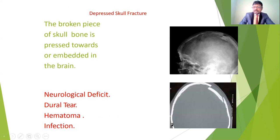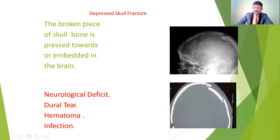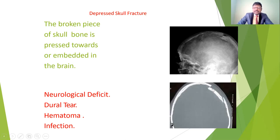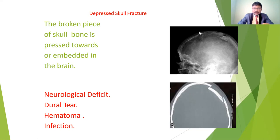Next is the depressed skull fracture. If a force hits one particular side, the fracture causes the bone to go inward — the broken piece of skull bone is pressed toward or embedded in the brain. It gives neurological deficiencies and may cause a dural tear. The dura mater gets injured, which can lead to hematoma and infection in case of depressed skull fractures.